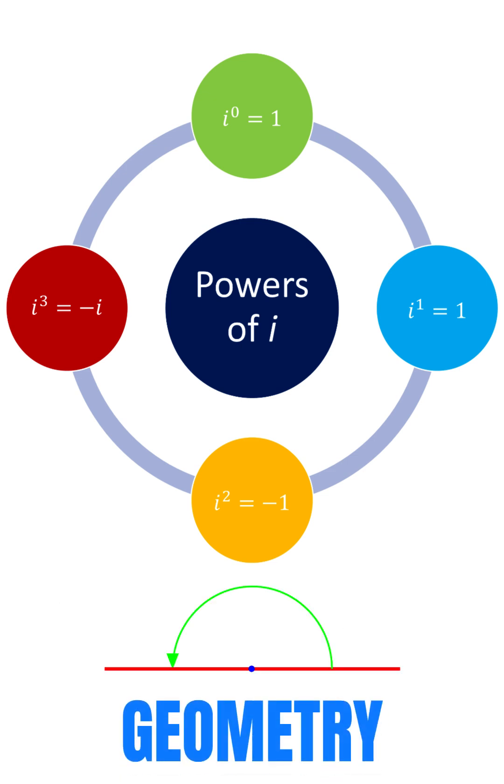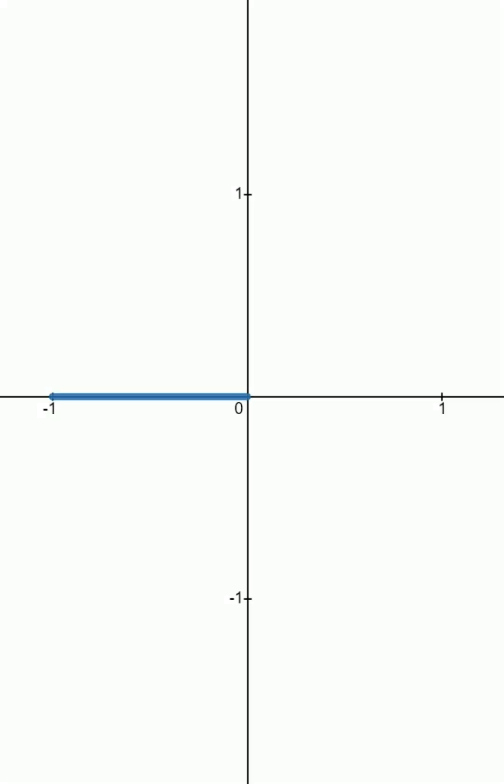But let's look at it from another angle, literally. If we lay out a number line, we can see that multiplying by negative 1 reflects a number across that line. Another way of describing this is that it rotates its position 180 degrees in space around the zero tip.